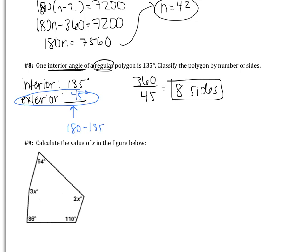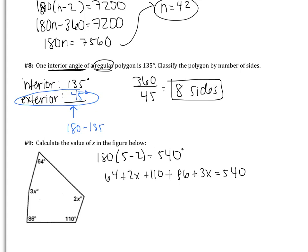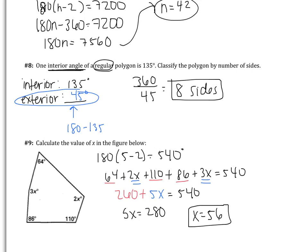Extra example 9: calculate the value of x in the figure — a pentagon. Interior angles sum to 180 times 5 minus 2 equals 540. Setting up the equation: 64 plus 2x plus 110 plus 86 plus 3x equals 540. Combining like terms: 260 plus 5x equals 540. Subtracting 260 gives 5x equals 280, so x equals 56.